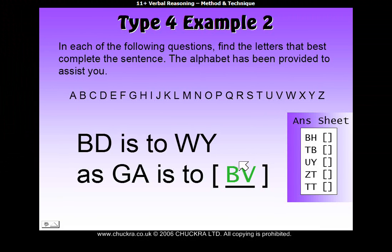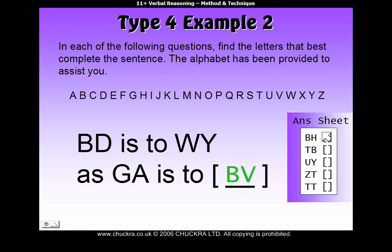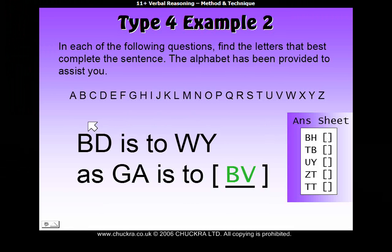So our answer using the old method would be BV. Now look here, BV doesn't appear on the answer sheet. So that means that there must be some other method of getting from BD to WY.